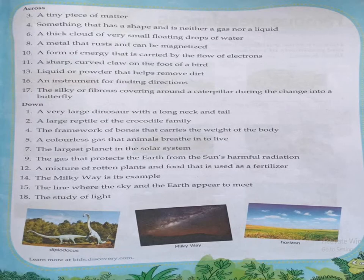The next clue is: a liquid or powder that helps remove dirt. It starts with D — that is detergent. Detergent is a powder that removes dirt. The next clue is: an instrument for finding directions. If you need to find directions, you use a compass.